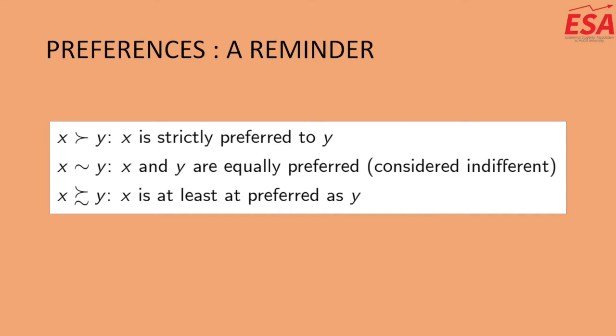That concept is vital to a consumer's utility, because we can represent preferences with a utility function if and only if they are complete, reflexive, transitive, and continuous. We can only represent preferences with the utility function assuming the consumer is rational and preferably well-behaved. A consumer is rational if they exhibit completeness, reflexivity, and transitivity, and they are well-behaved if they exhibit weak monotonicity as well as regular convexity and strict convexity.